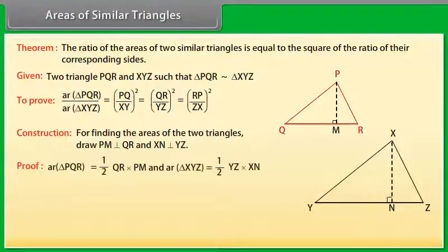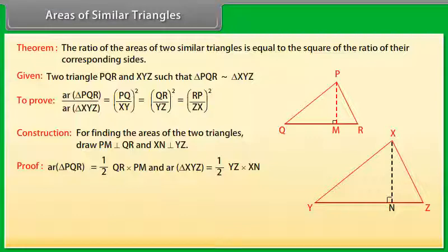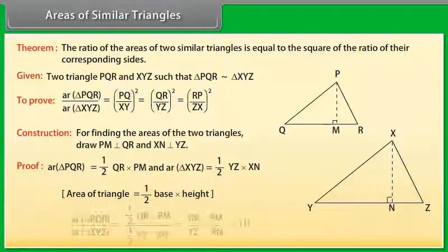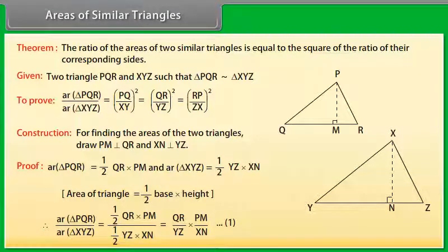Proof: Area of triangle PQR is equal to 1/2 × QR × PM, and area of triangle XYZ is equal to 1/2 × YZ × XN. Since area of triangle equals 1/2 × base × height, therefore area of triangle PQR upon area of triangle XYZ equals QR upon YZ into PM upon XN. Mark it as equation 1.